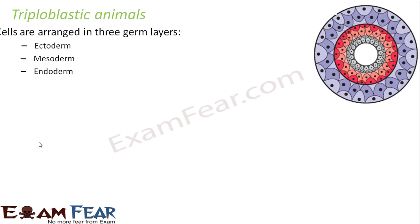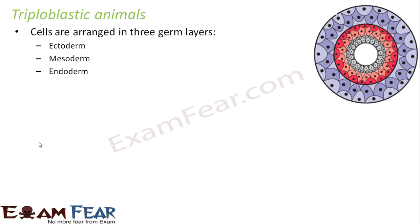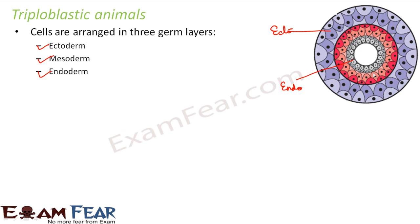Let us look at triploblastic animals. Here they will have three germ layers. The previously known germ layers — ectoderm and endoderm — are still present, but now we also have a mesoderm. 'Meso' means middle, so mesoderm is present between ectoderm and endoderm. It is just that the mesoglia is replaced by the mesoderm. If you look at the mesoderm, it consists of cells because it is a specific germ layer made up of cells.